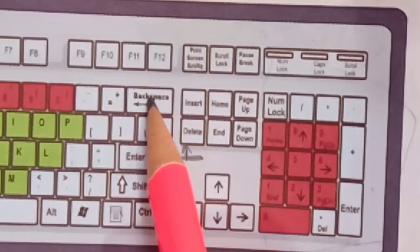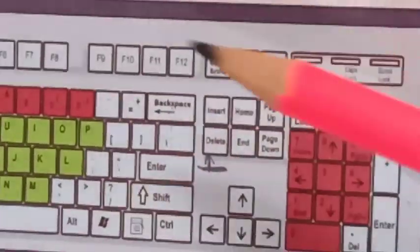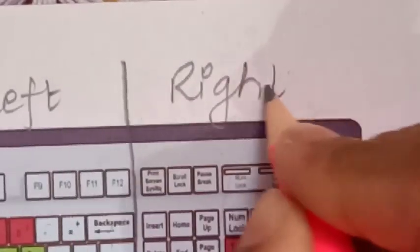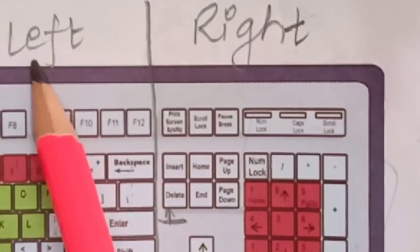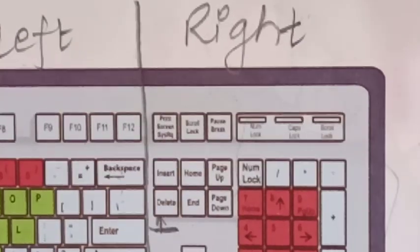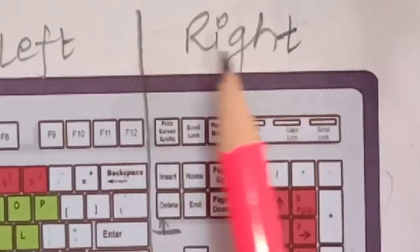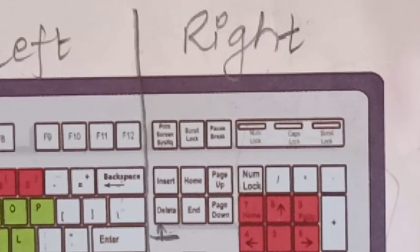Here are the backspace and delete keys on the keyboard. If we draw a line between them — this is the left side and this is the right side. The backspace key is on the left side, so it always erases to the left. The delete key is on the right side, so it always erases to the right. Is that clear?